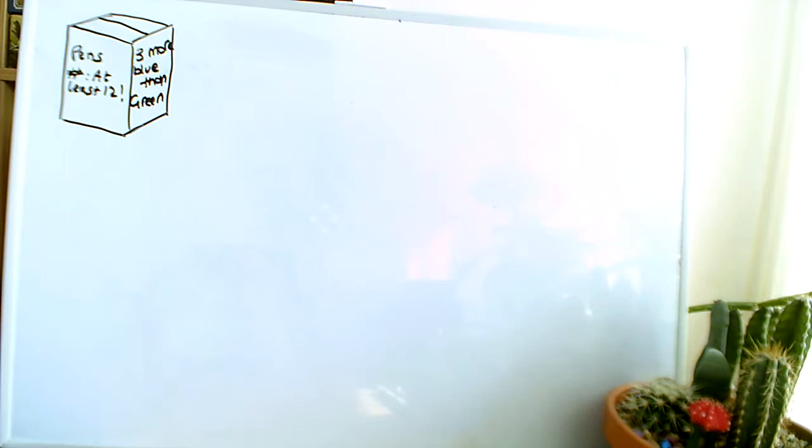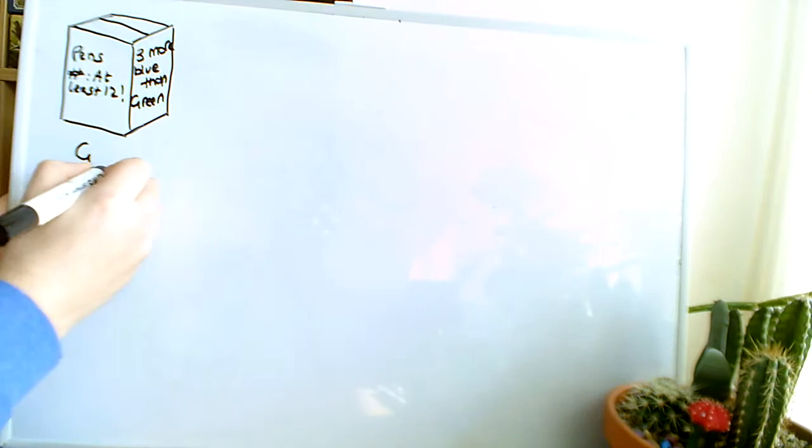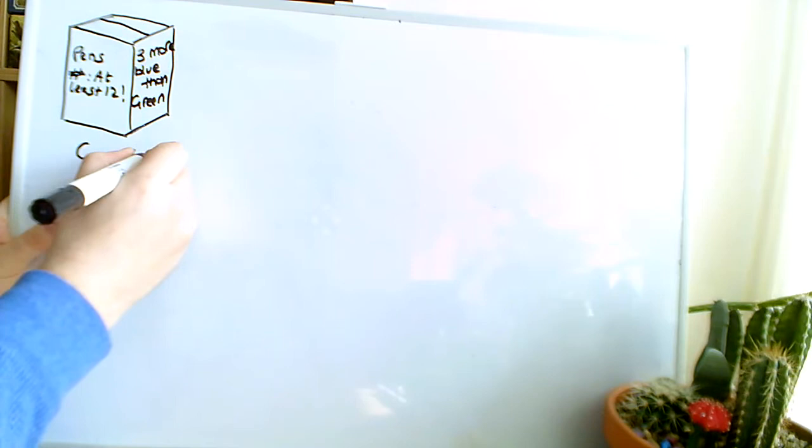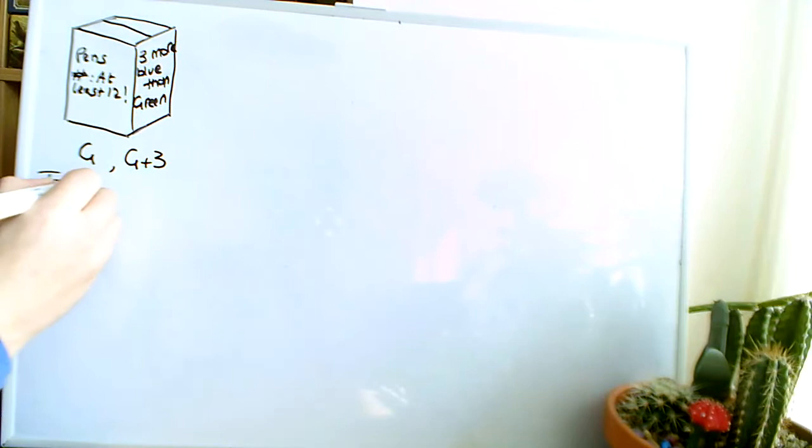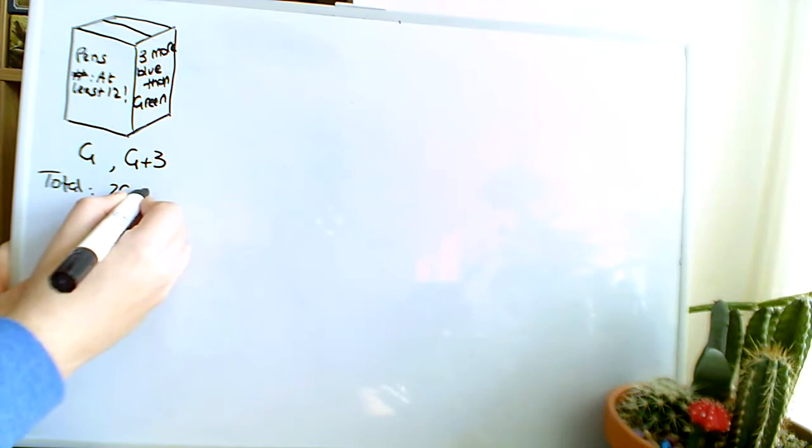So let's try and put this information down with as few variables as possible. I'll say that the number of green is G, and the number of blue is G plus 3. So total pens in this box is the sum of these two things, so 2G plus 3.